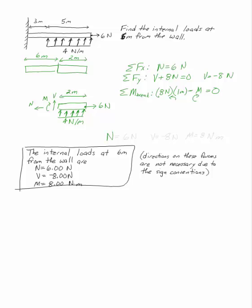So my internal loads that I calculated are N equals 6 Newtons, V equals minus 8 Newtons, and M equals 8 Newton meters. If you were to find out what the loads were at the wall and then come back and do the internal loads at this same spot from the left, you would get the same numbers, but you don't have to.